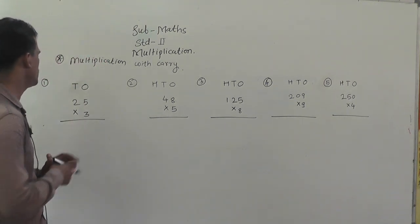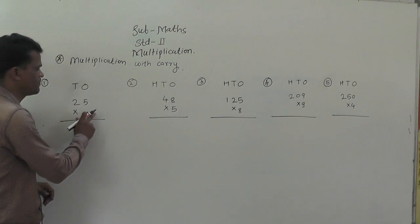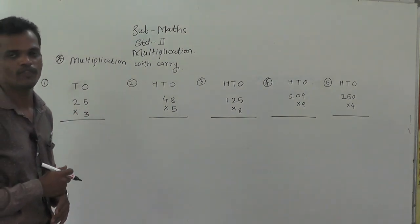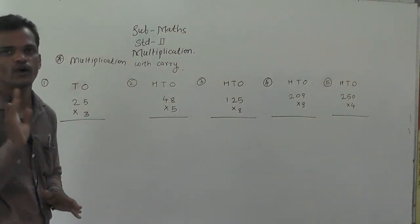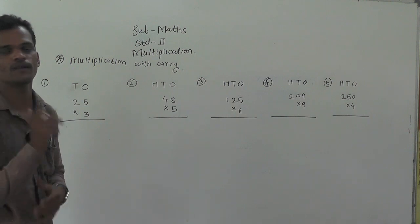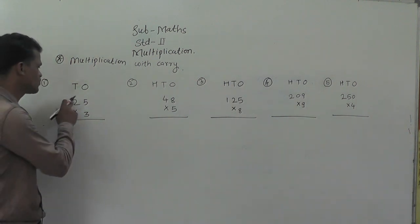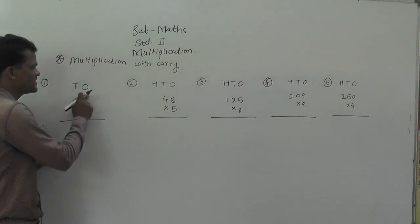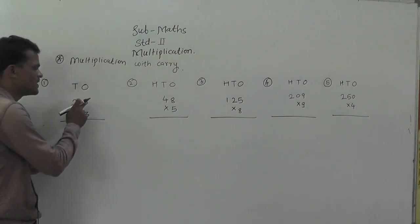The first example: 25 multiply by 3. Always start from the ones place to multiply. First, see here 25. The ones place digit is 5, so first multiply this 5 by 3.